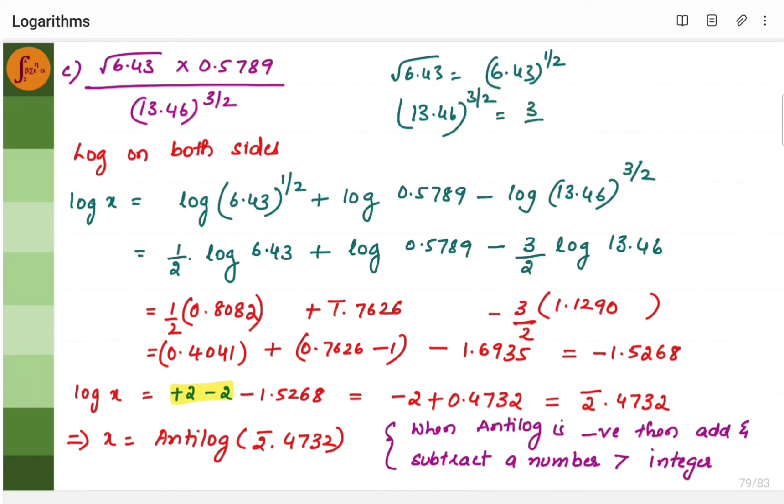You can write it as 3 by 2 into log of 13.46. This will be half into log of 6.43. Now you split this like this.